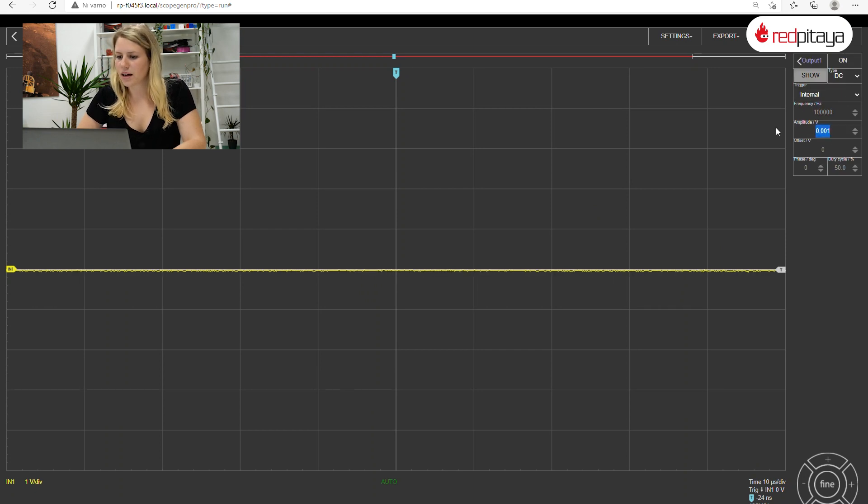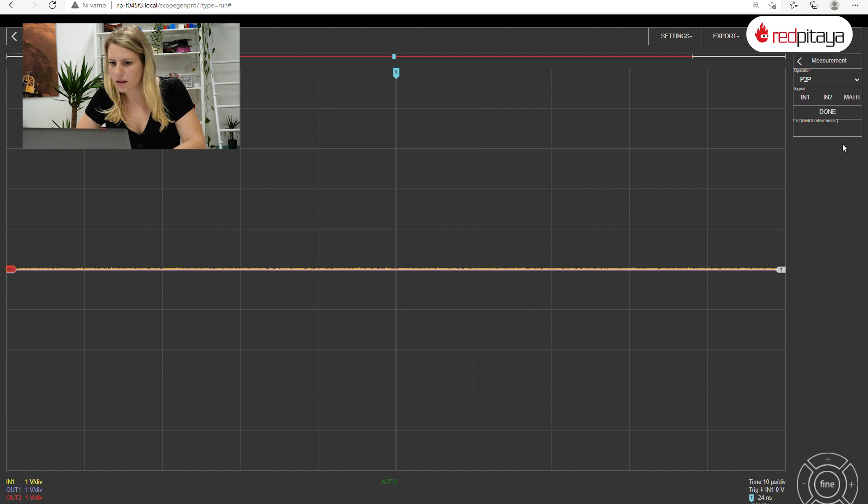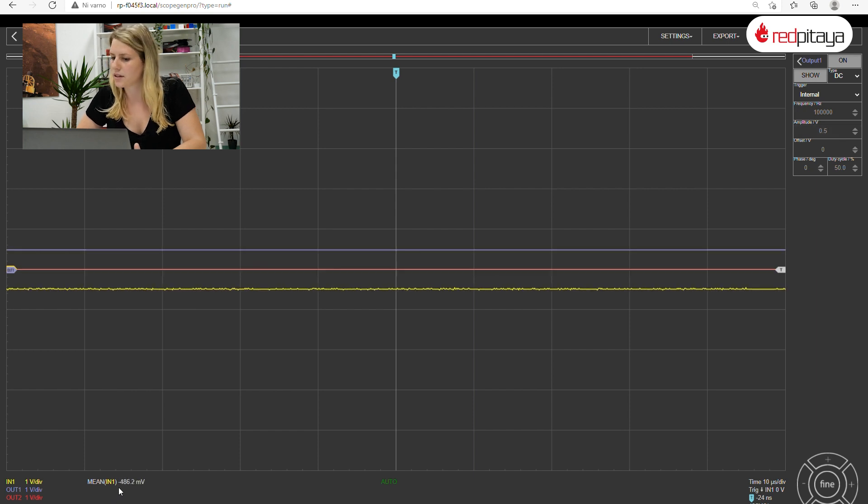Let's take a look at how the system behaves. I will set outputs to DC, 0V, and add a measurement for mean value on input 1 to make things easier. If I now set circuit's input 1 to some value, output mirrors that value.